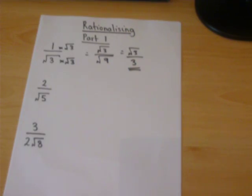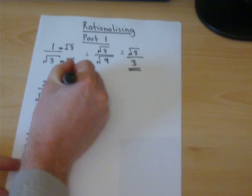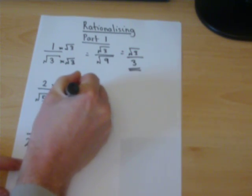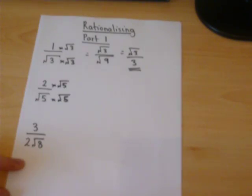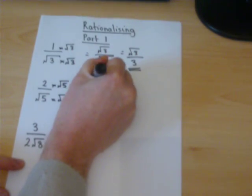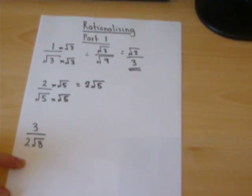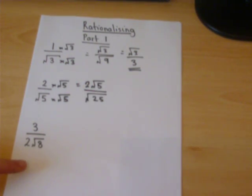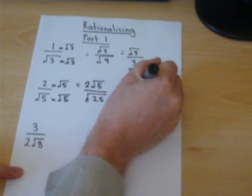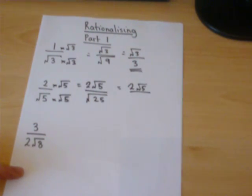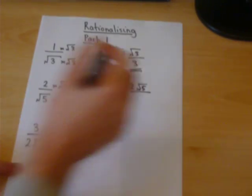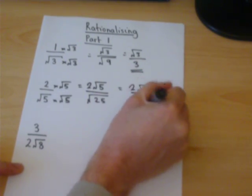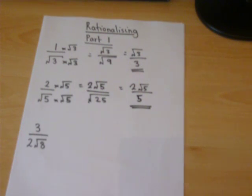You can probably follow the pattern now. We times this one in the second example by root 5. 2 times root 5 we can only write as 2 root 5. But we know when they are both square roots, we can write it as 25. And we can then work out what the bottom of the fraction is, because we can work out the square root of 25, which equals 5. And that is a rationalised third.